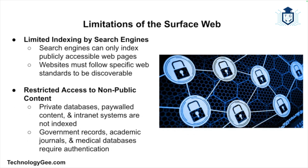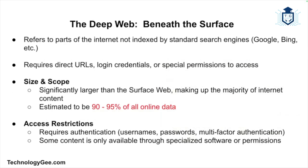While the surface web is extensive and useful for everyday purposes, it does have its limitations. Search engines can only index content that is publicly accessible and follows specific web standards. As a result, a significant portion of the internet remains hidden from search engines and is not available on the surface web. This is where the deep web comes into play.